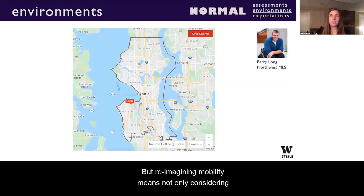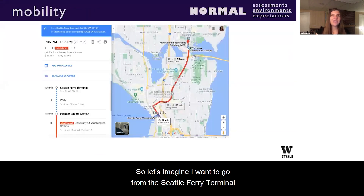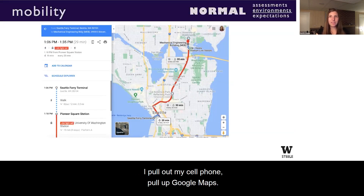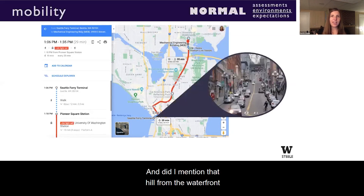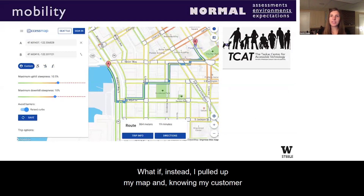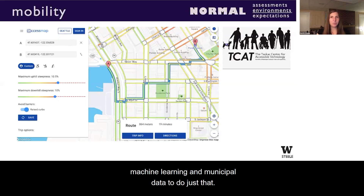Reimagining mobility means not only considering ways we can improve the physical environment, but also designing tools and technology that automatically overcome environmental barriers. Imagine going from the Seattle Ferry terminal to the mechanical engineering building on the UW campus — even with great public transportation options, my 29-minute trip requires 20 minutes of walking, and that hill from the waterfront to the light rail has a 6% grade. What if instead, knowing my custom profile of preferred slopes and modes of mobility, my map could alert me that a different route to a nearby light rail station would actually be the best option? Initiatives like Access Maps and Open Sidewalk are demonstrating how we can leverage machine learning and municipal data to do just that.